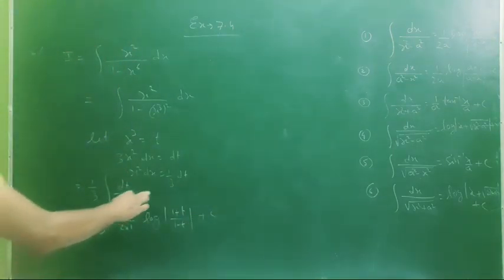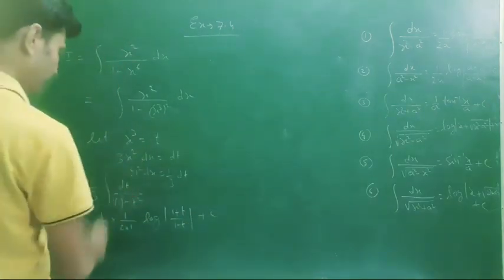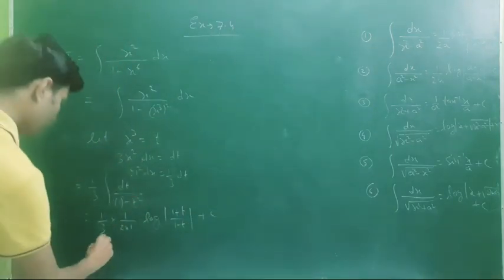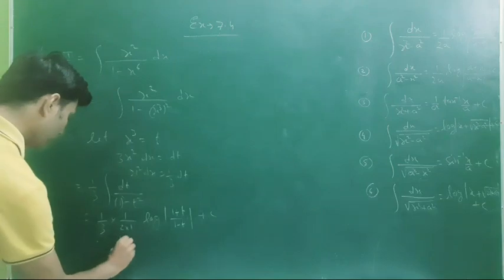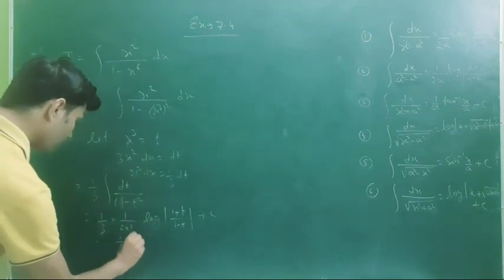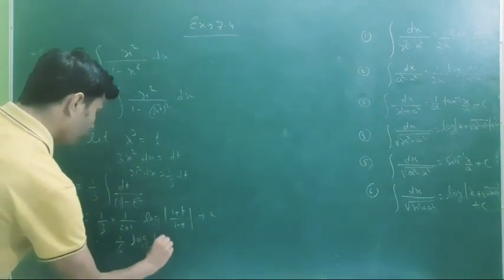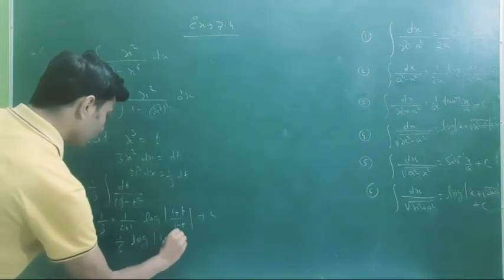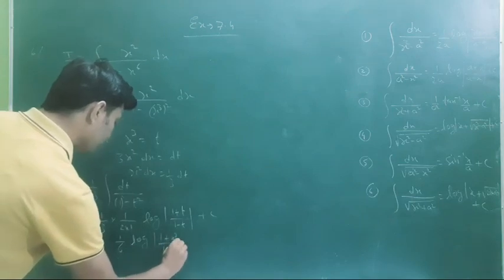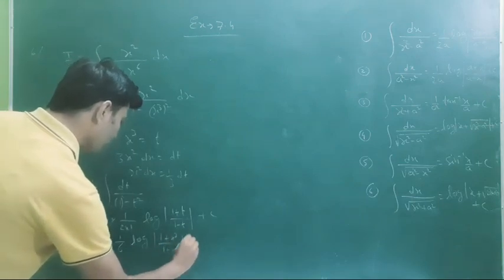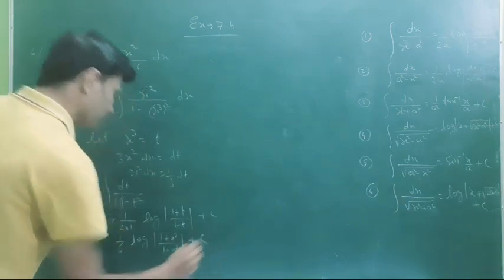Now back-substitute t equals x cubed. The final answer is one-sixth times log of (1 plus x cubed) over (1 minus x cubed), plus C.